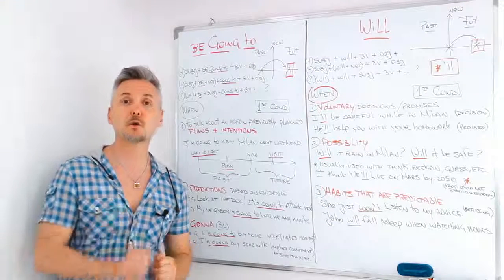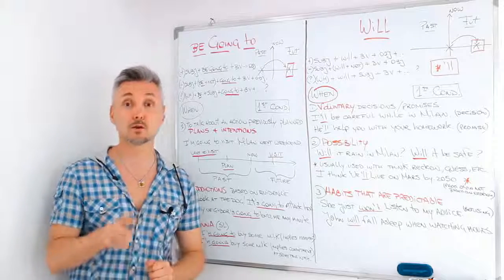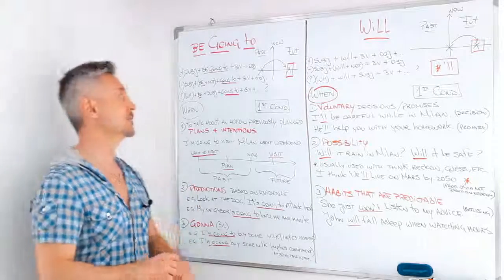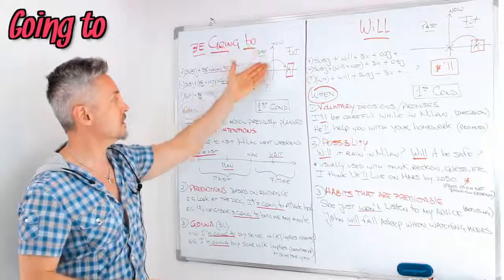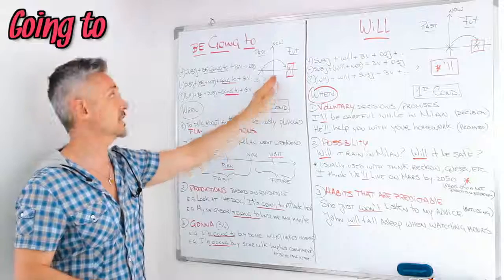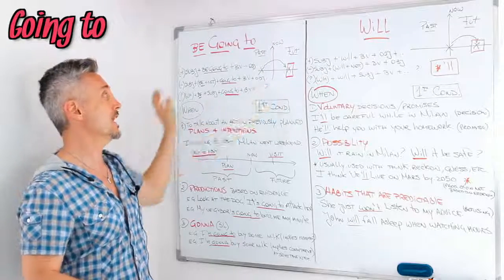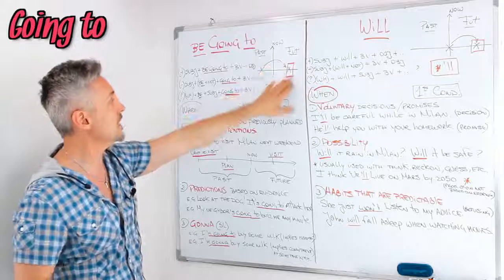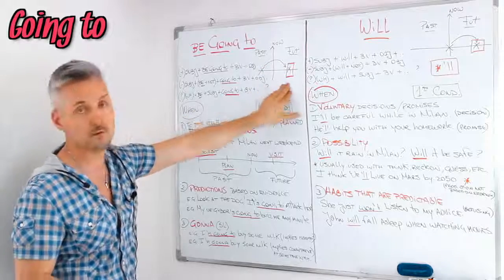Right, so be going to and will. Let's look at first the timeline. If you have a horizontal line, I divided it with a vertical line that represents now. On the left hand side you have the past, and on the right hand side you have the future.